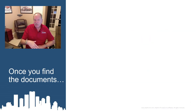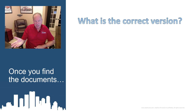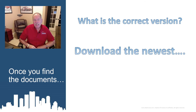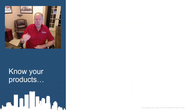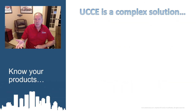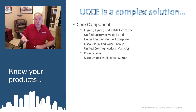Once you find the documents, what do you do with that information? What is the correct version that you need? Cisco may have multiple different versions of a document. You need to know your products. It is a complex solution — look at the core components: Communications Manager, CVP, UCCE, Finesse, and Intelligence Center for reporting. There are also optional components like enterprise chat and email, silent monitoring, and remote expert.